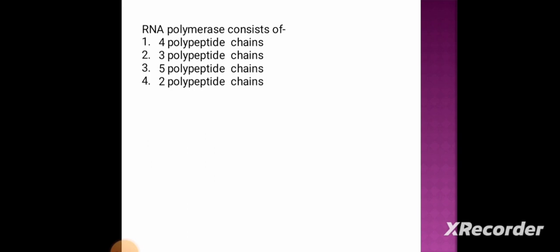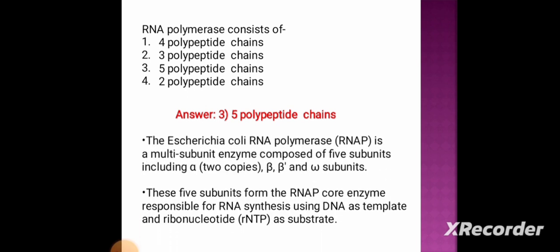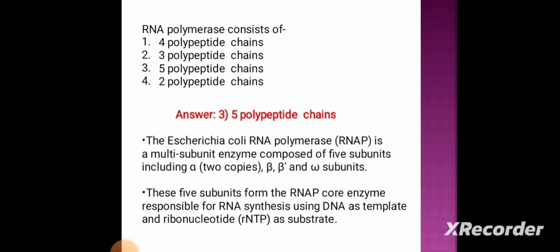RNA polymerase consists of: option 1 — four polypeptide chains, option 2 — three polypeptide chains, option 3 — five polypeptide chains, option 4 — two polypeptide chains. The correct answer is option 3, five polypeptide chains. In E. coli, RNA polymerase is a multi-subunit enzyme composed of five subunits: two alpha subunits, one beta, one beta-prime, and one omega subunit. These five subunits form the RNA holoenzyme responsible for RNA synthesis using DNA as a template and ribonucleotides as substrate.